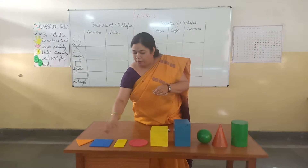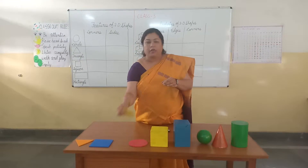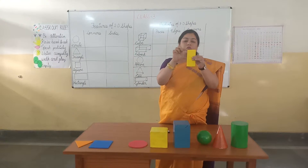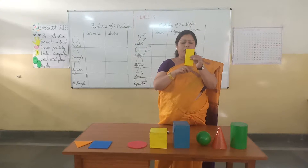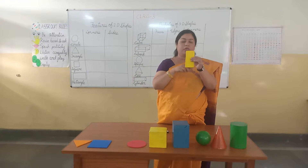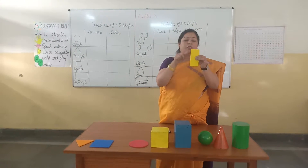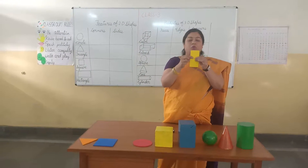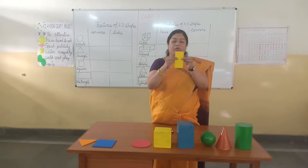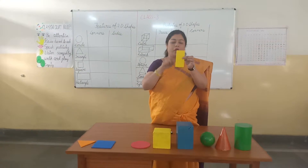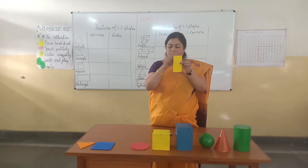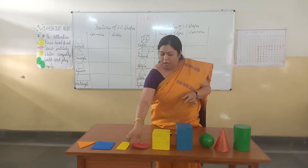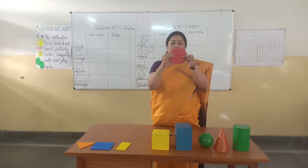The next shape is a rectangle, and the rectangle has 1, 2, 3, 4 corners and 1, 2, 3, 4 sides. But you can see, in a rectangle only opposite sides are the same.